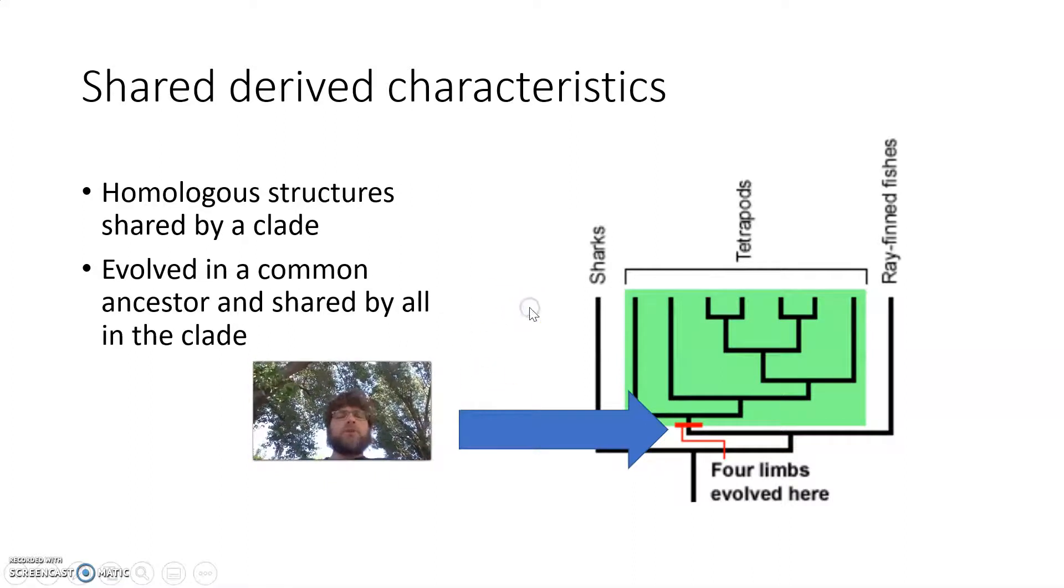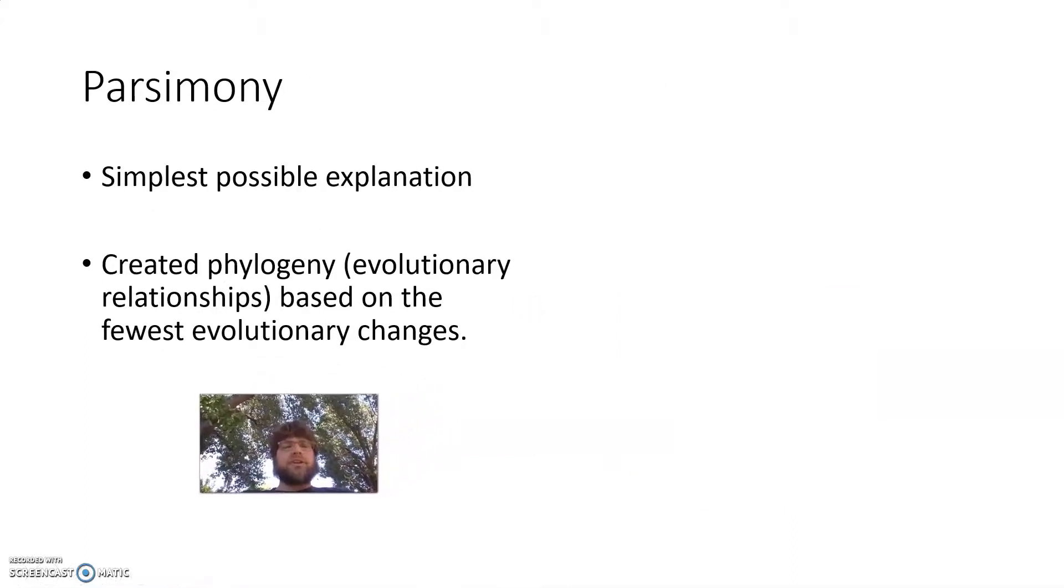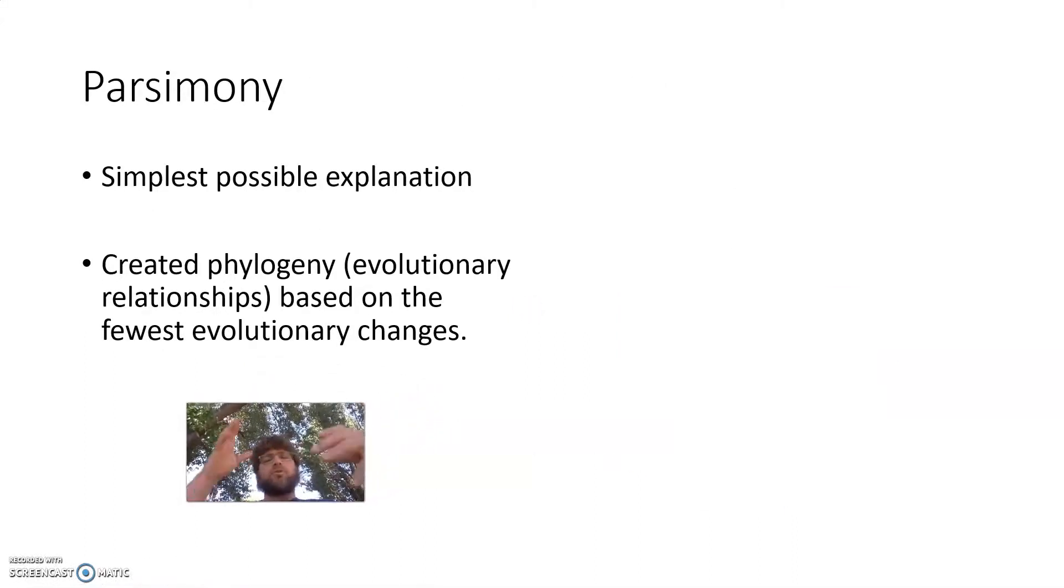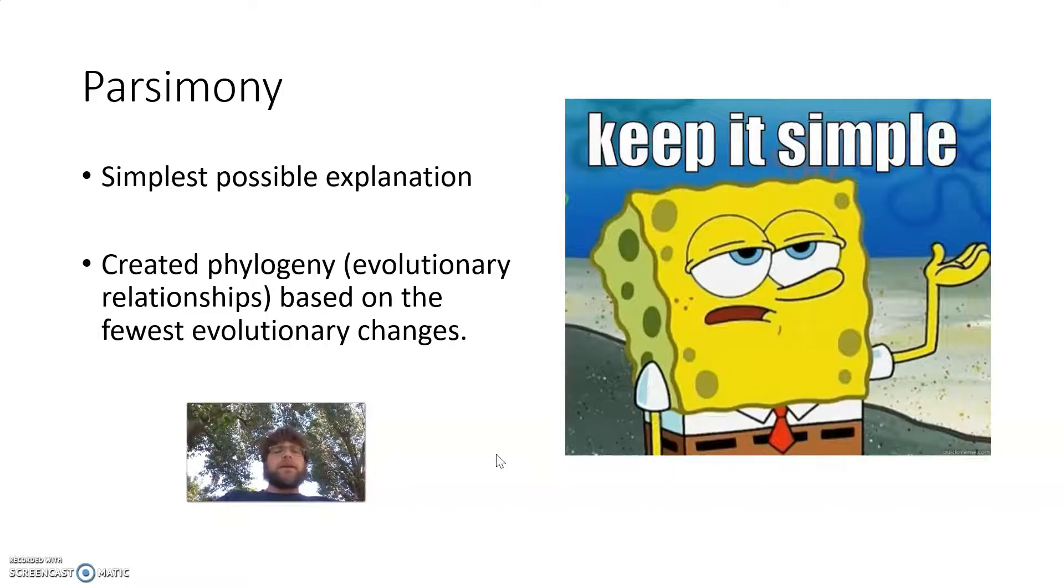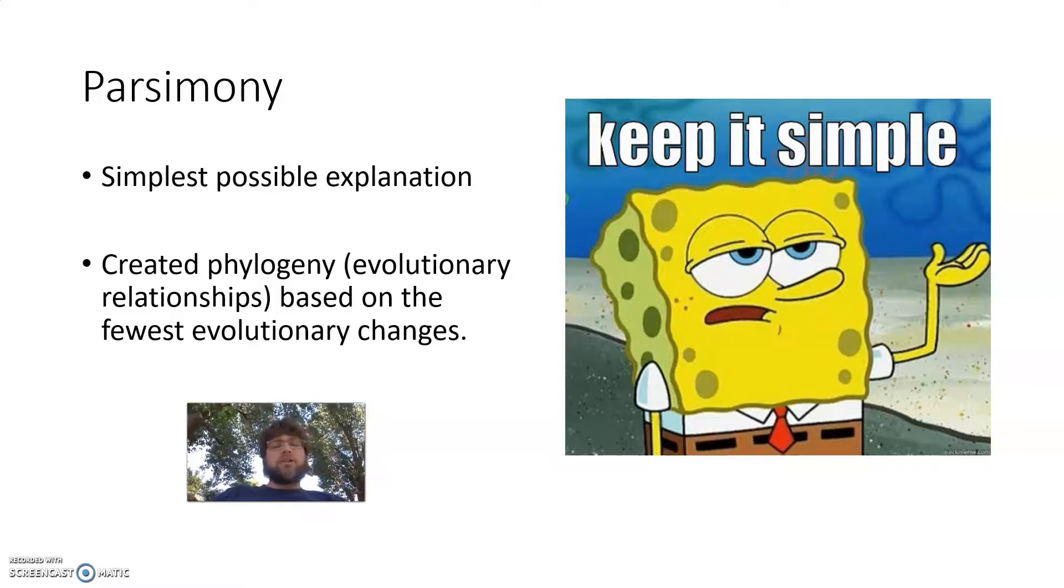Now, when we're looking at shared-derived characteristics and we determine where do we put what shared-derived characteristic, you want to keep in mind parsimony. And parsimony is this idea that the simplest possible explanation is best. Keep it simple. When you're making a cladogram, make the simplest possible cladogram you can make with all the information. You don't want things evolving two times if you can help it.